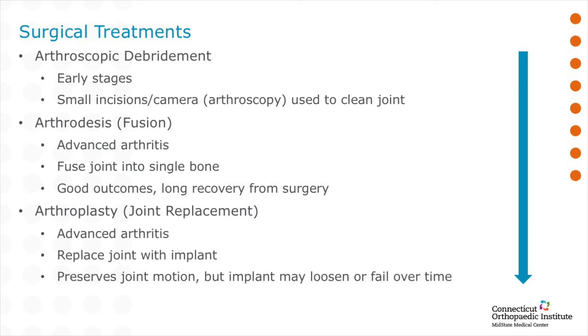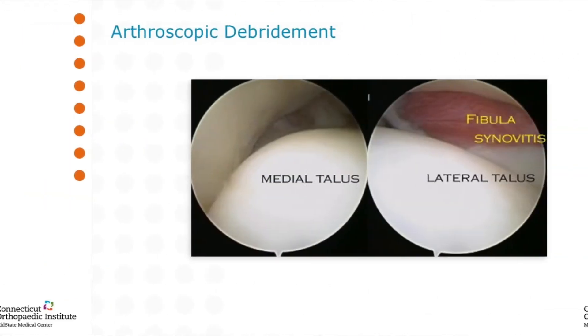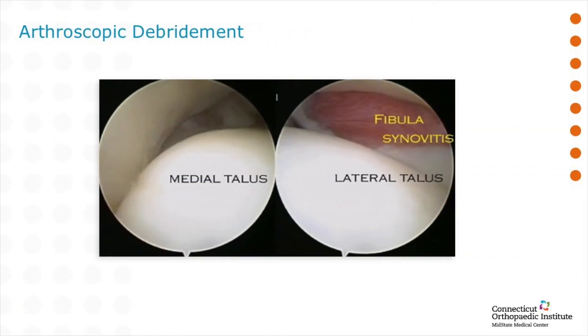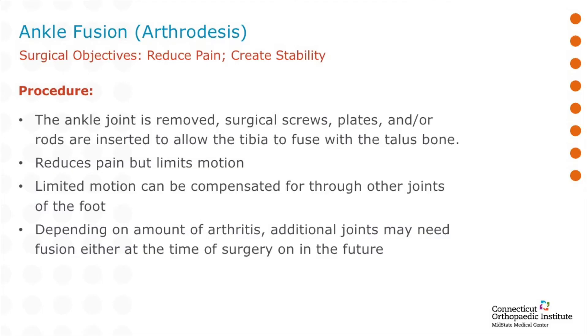Ankle arthroscopy is essentially going into the ankle with a camera and a shaver through two small incisions. I go in and clean up any damaged cartilage and damaged bone spurs to get you back to feeling better. A healthy ankle has very smooth and shiny white cartilage, whereas an arthritic ankle lacks that smooth shiny surface, shows a lot of damaged structures, and is probably very painful. Ultimately, if you don't get an appropriate amount of benefit from the ankle arthroscopy, then we have to talk about more definitive procedures.